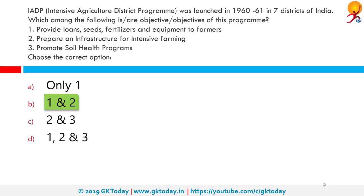The IADP program was launched in 1961 after the community development program lost steam. The core philosophy was to provide loans for seeds and fertilizers to farmers. Intensive Agricultural Development Programme was started with the assistance of the Ford Foundation.